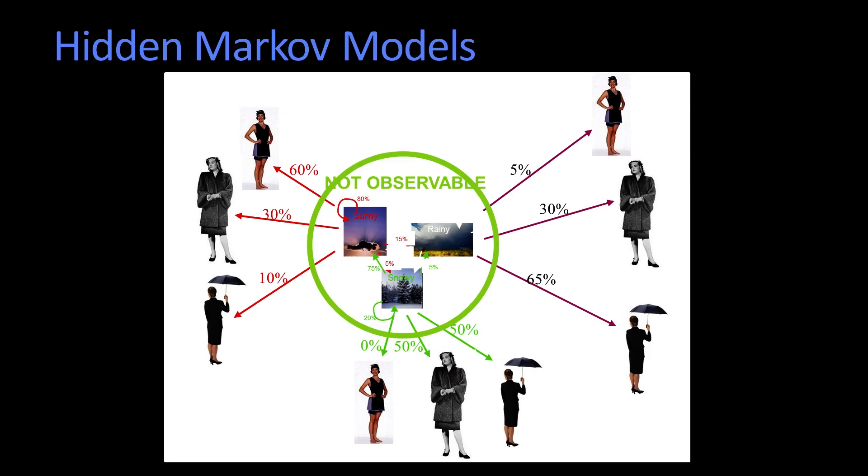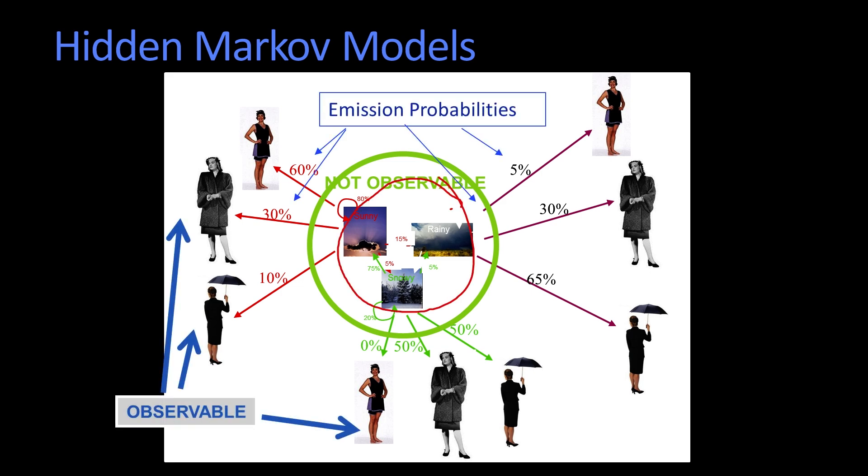And what that means, our entire system when it's running looks like this. In this new system, where we can't observe the states, we don't ask questions about the likelihood of having seen a particular sequence of states, because we can't see the states.